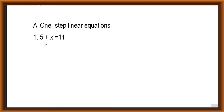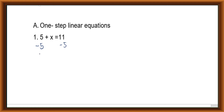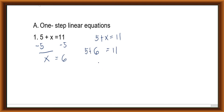Consider the one-step linear equation 5 plus x equals 11. What we do is subtract both sides by 5, so x equals 11 minus 5, which gives x equals 6. For the check, substitute x = 6 into the equation: 5 plus 6 equals 11, and 11 equals 11. Therefore, our solution set is {6}, which makes the equation true.